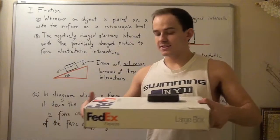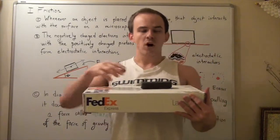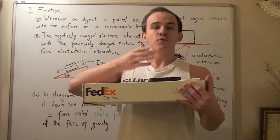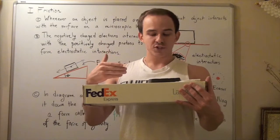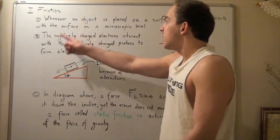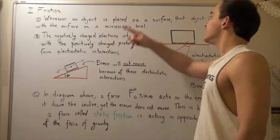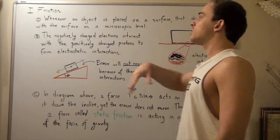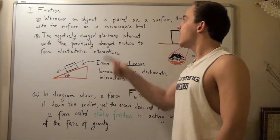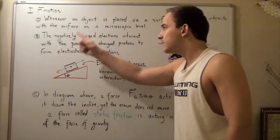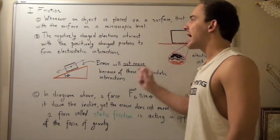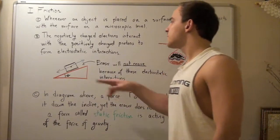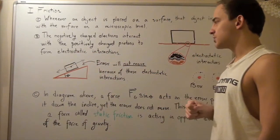When I place the eraser onto the box, these atoms interact and form electrostatic interactions. Whenever an object is placed on the surface of a second object, it interacts with that surface on a microscopic level. The negatively charged electrons interact with the positively charged protons in the nucleus to form electrostatic interactions.